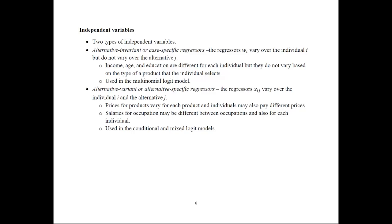On the other hand, alternative variant, or alternative-specific regressors, x_ij, vary over both individual i and alternative j. Examples include prices for products, which vary across products and individuals — maybe because people shop at different stores. Salaries for different occupations also vary across occupations and individuals. These variables are used in the conditional and mixed logit models. If they don't vary across alternatives, we use them in the multinomial models.